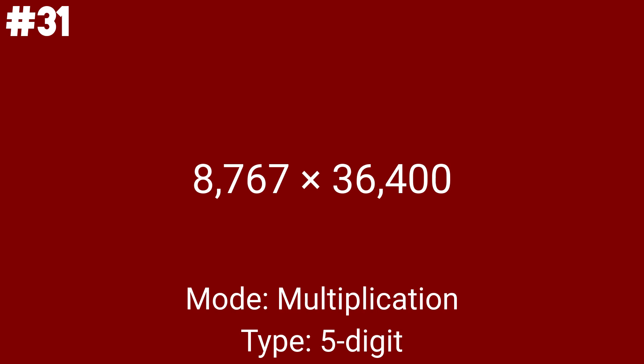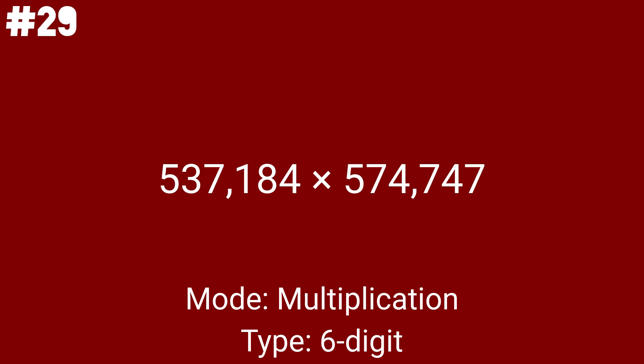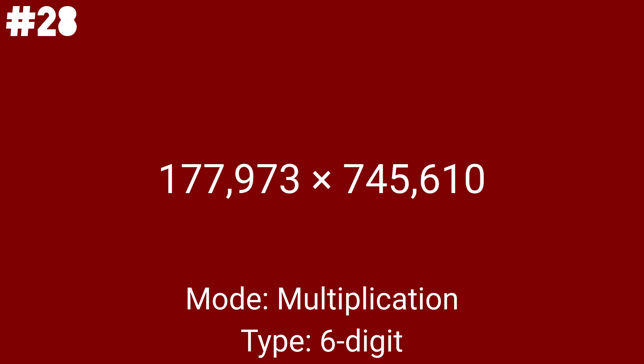Let's move on to the final category of multiplication — the 6-digit multiplication problems. 829519 times 236488 is the first multiplication problem with 6 digits. We are at the last 5 multiplication problems. The 4th to final multiplication problem is 537184 times 5747 — problem number 27. We have solved over half of the math problems. 177973 times 745610 will be problem number 28, the third to last multiplication problem.